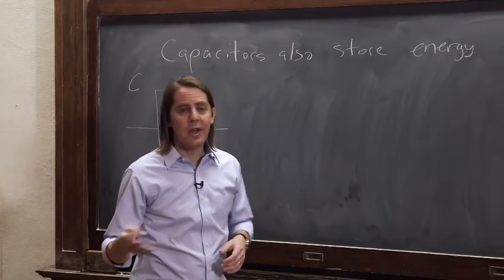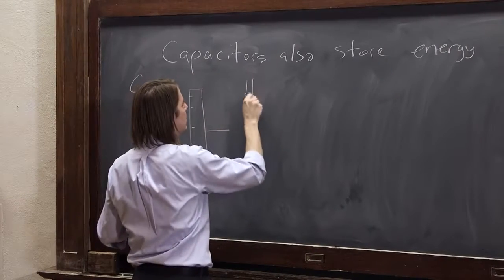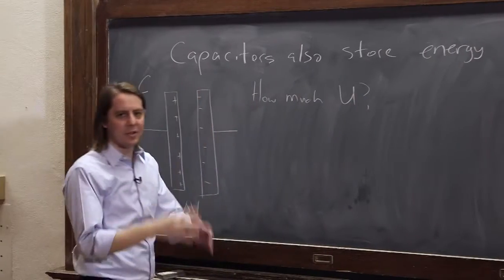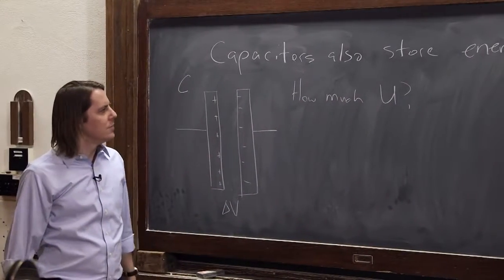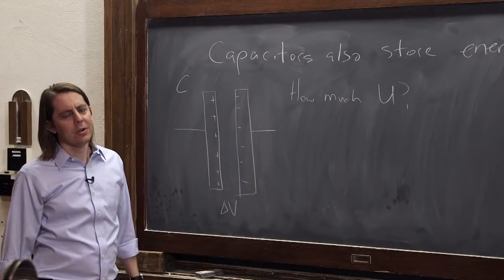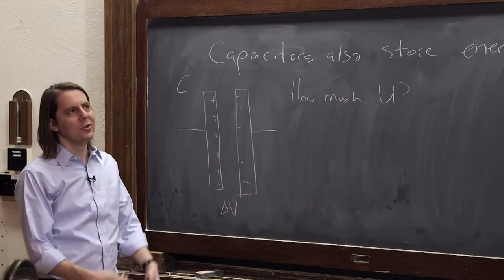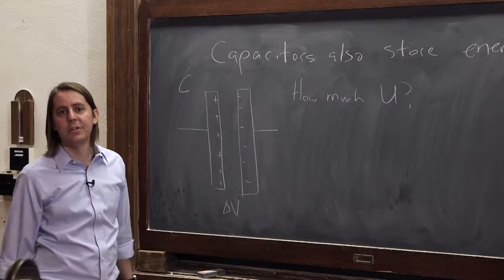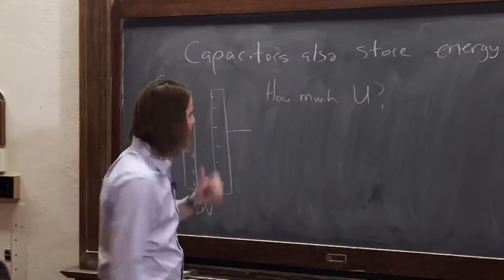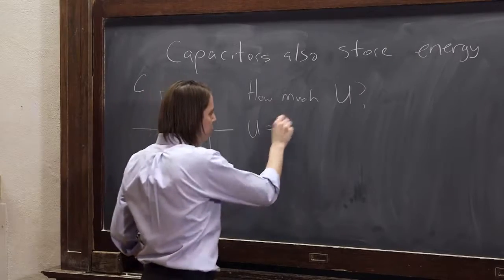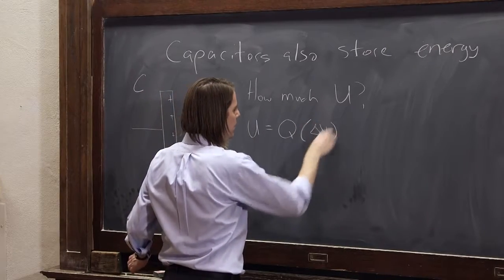So the question is, how much energy? Which I'll call U. How much potential energy is in there? So you might look at it, and you think back to our learning sequence on potential, and you'd say, well, if you have a charge Q at some potential, then that's the energy. You just multiply the potential times the energy.